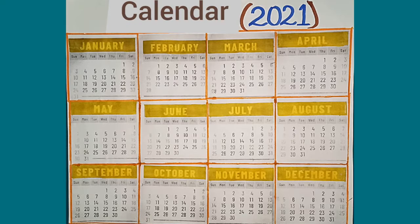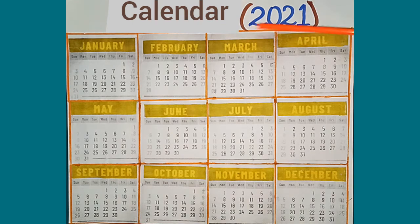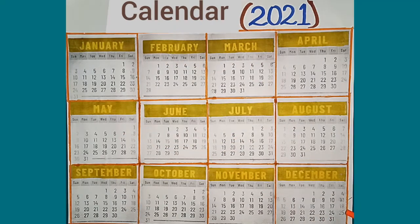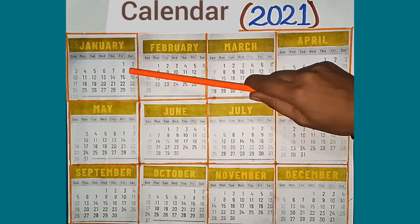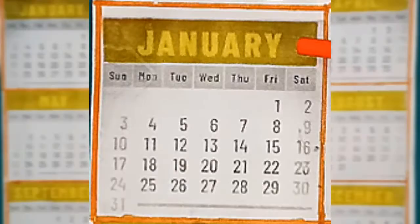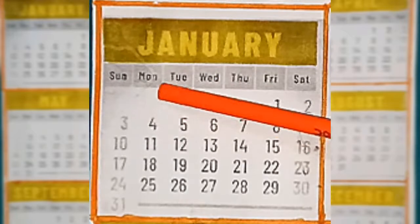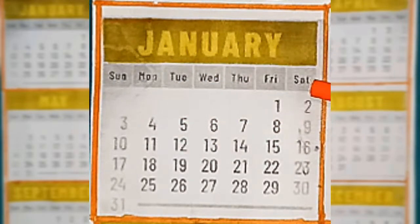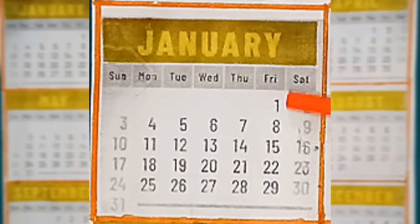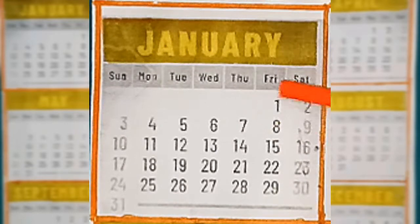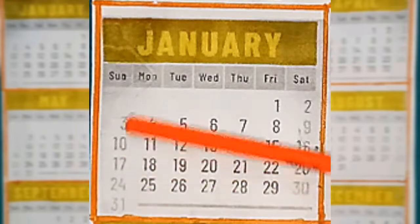Students, I have a 2021 calendar here. This calendar has 12 months from January to December. We first see the month of January. January is the first month of the year. The names of the days of the week are written on this month. The first day of January is Friday and the last day is Sunday.